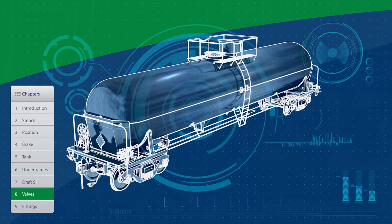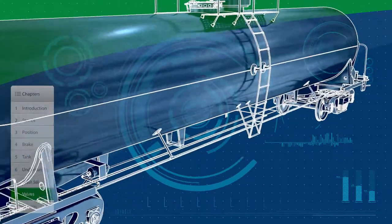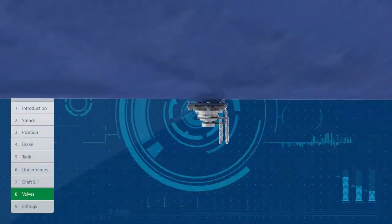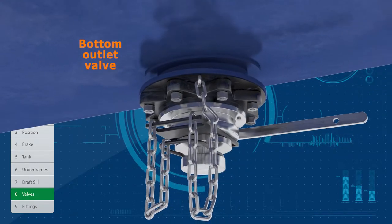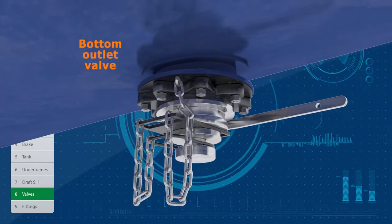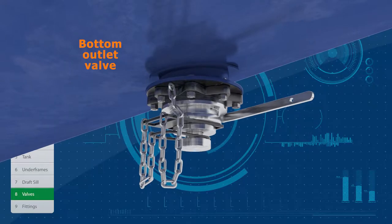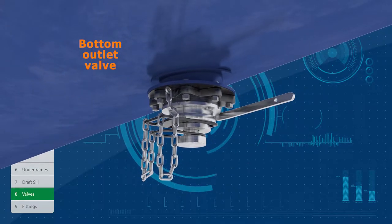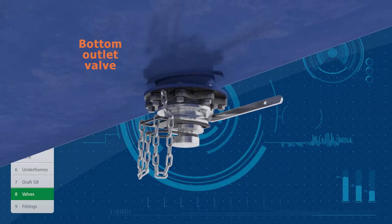The bottom outlet valves allow for the commodity to be gravity unloaded from the bottom of the tank car. Common valves include the external ball valve, the wafer-sphere valve, also known as a butterfly valve, the bottom-operated plug valve, and the top-operated plug valve.